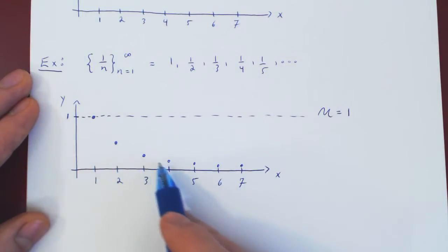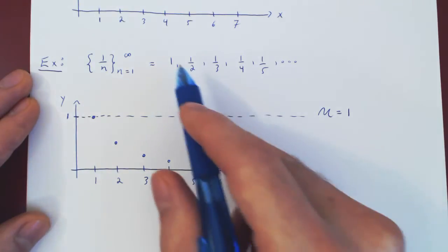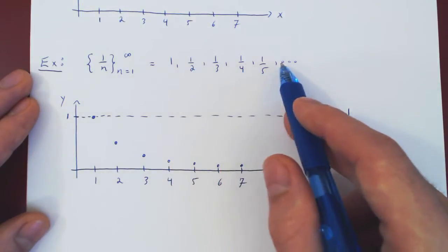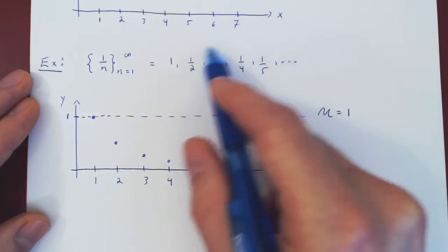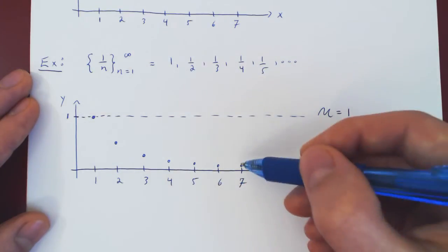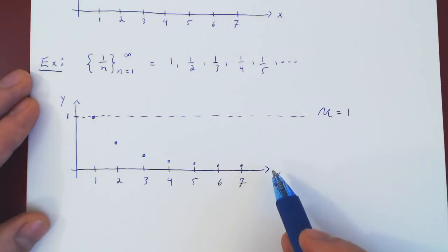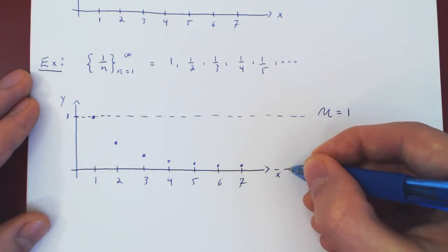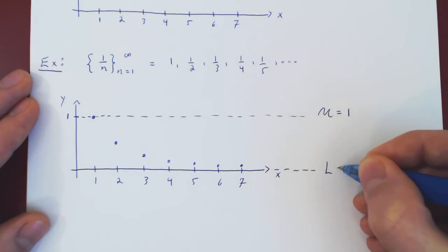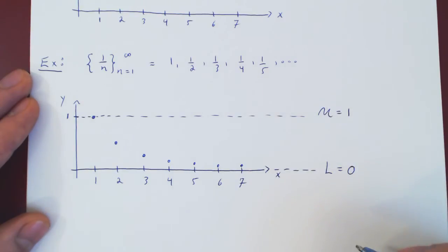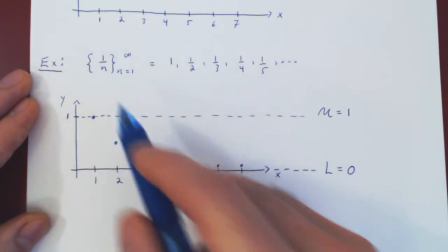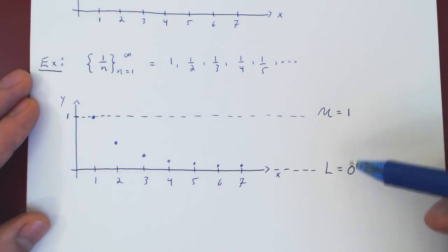And how low can the terms go? Well, these terms will be getting smaller and smaller and smaller, but they are always strictly positive. So the terms will never go below the x-axis, so never go below the y-value that is 0. So y equals 0 is our lower bound. Therefore, the sequence 1 over n is bounded between 0 and 1.